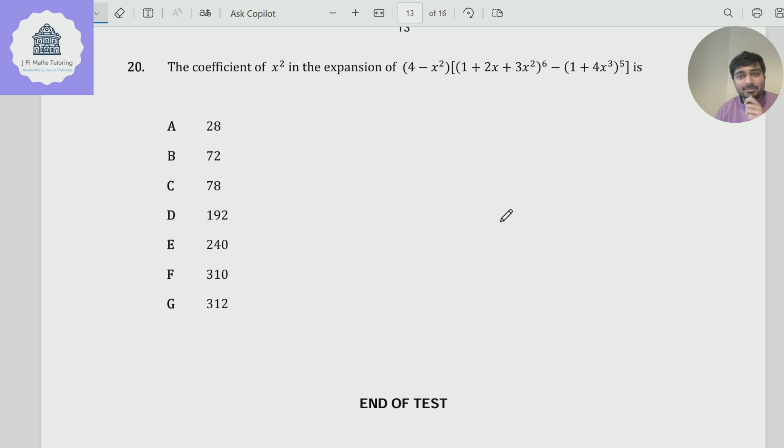Today I've got a problem from the TMUA specimen paper, the last question of paper one. We want to know what is the coefficient of x squared in the expansion of (4 - x²) multiplied by (1 + 2x + 3x²)⁶ minus (1 + 4x³)⁵. We've been given seven options here.